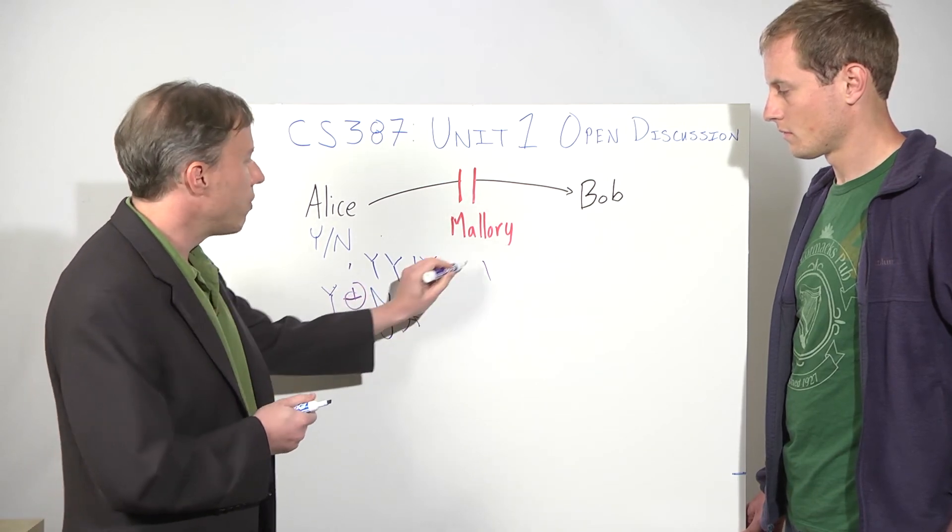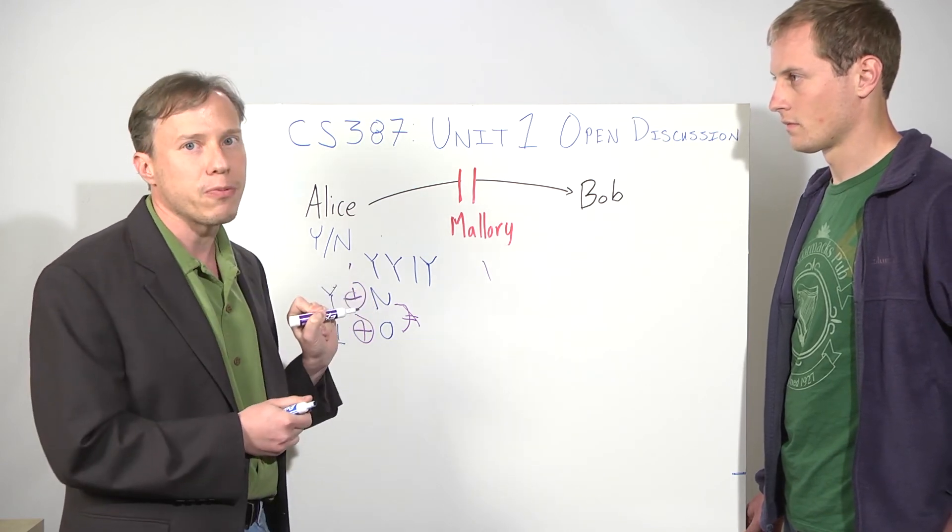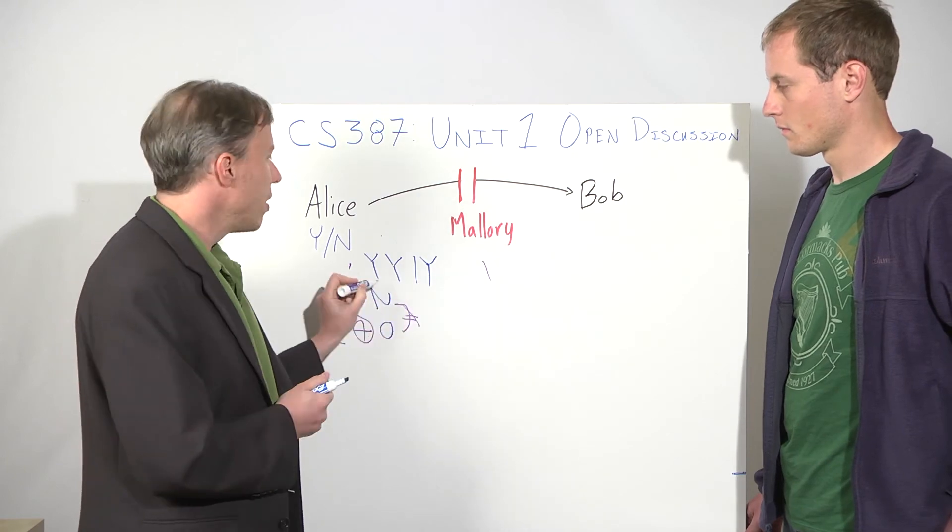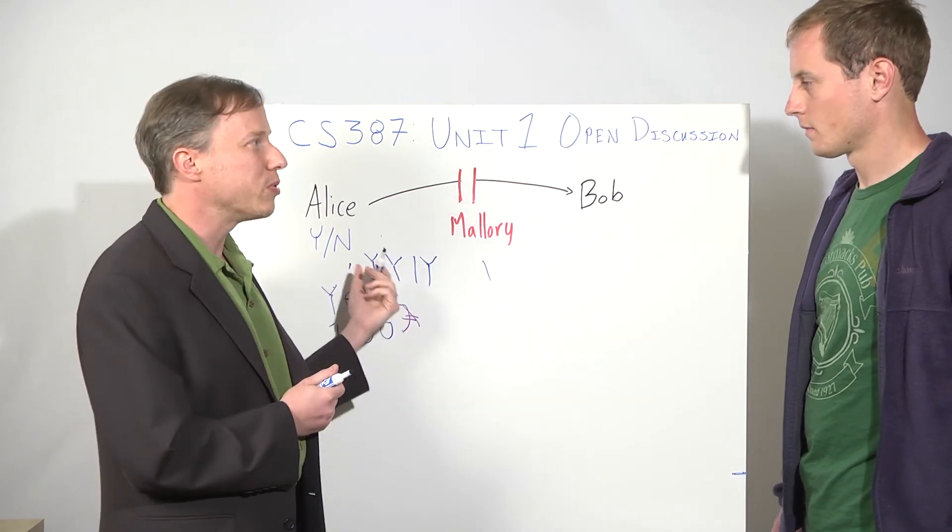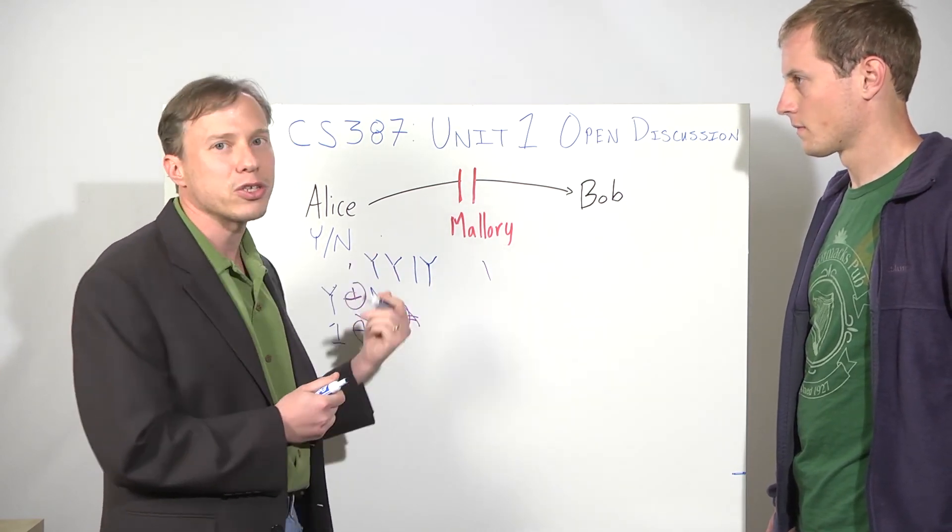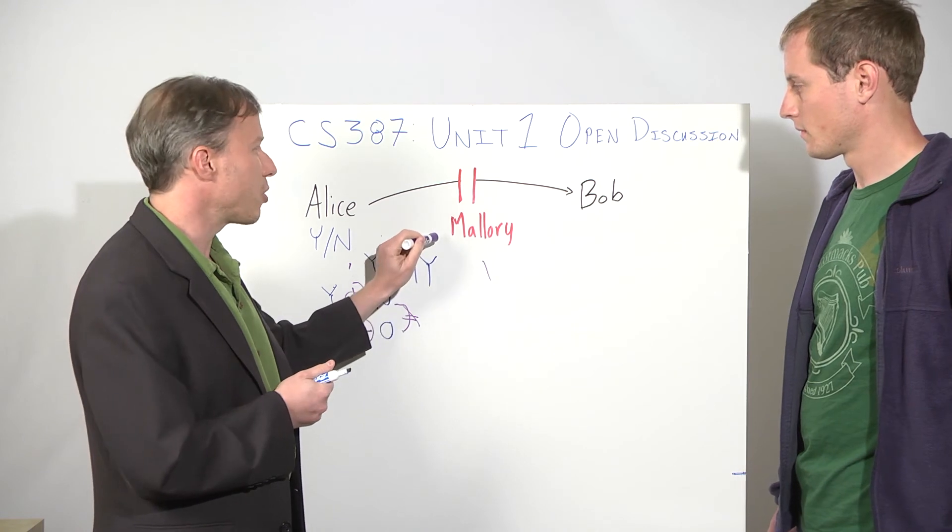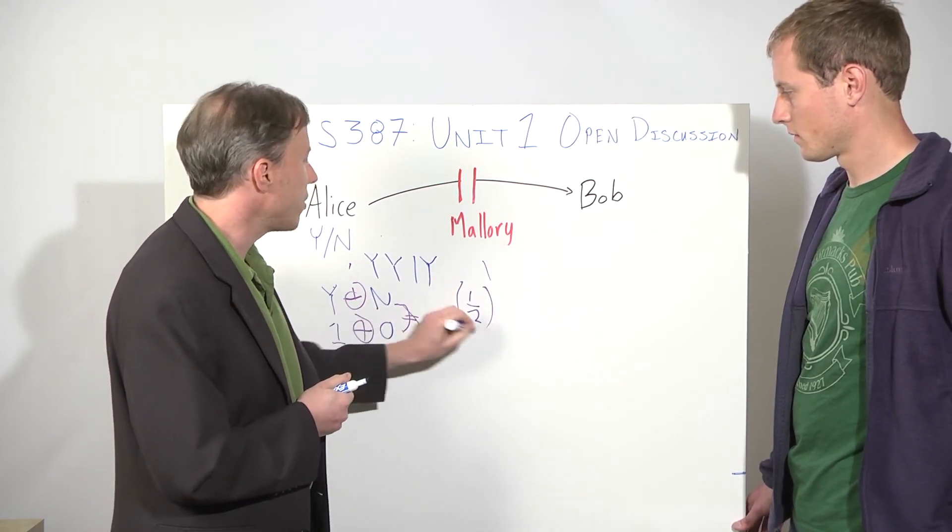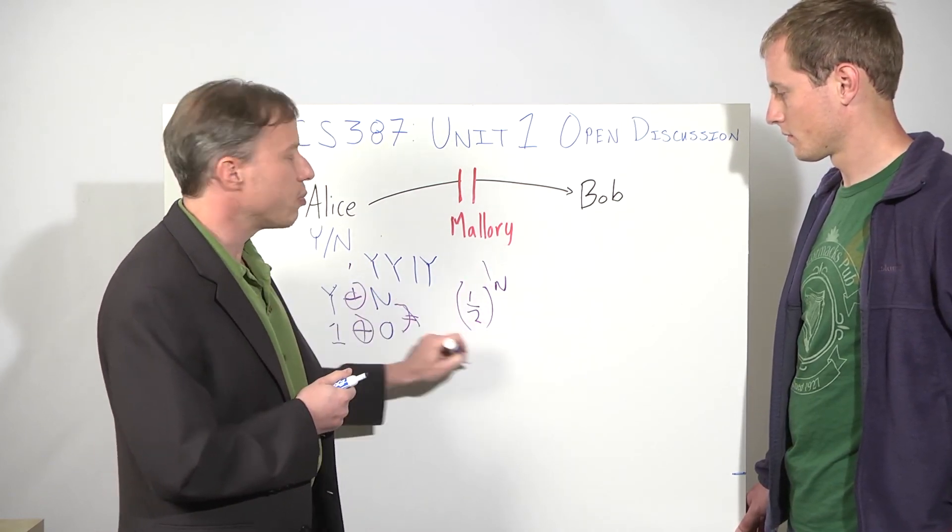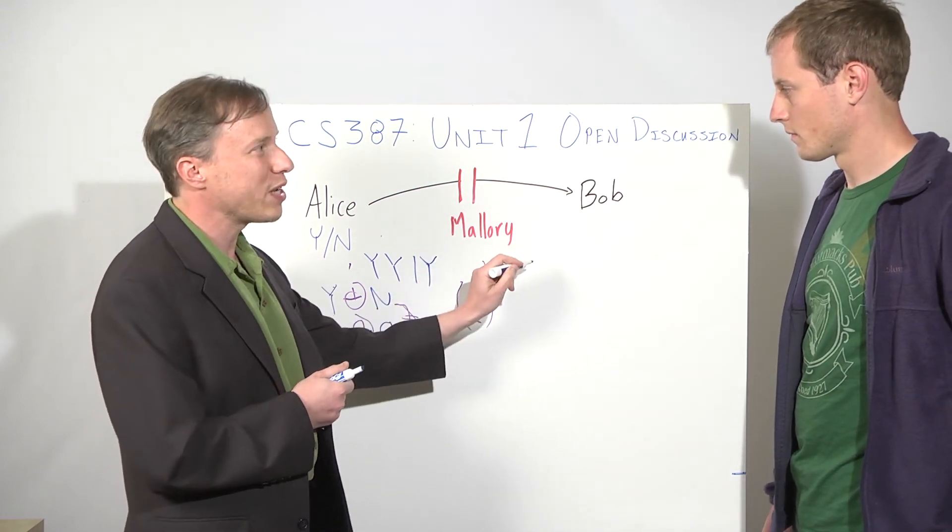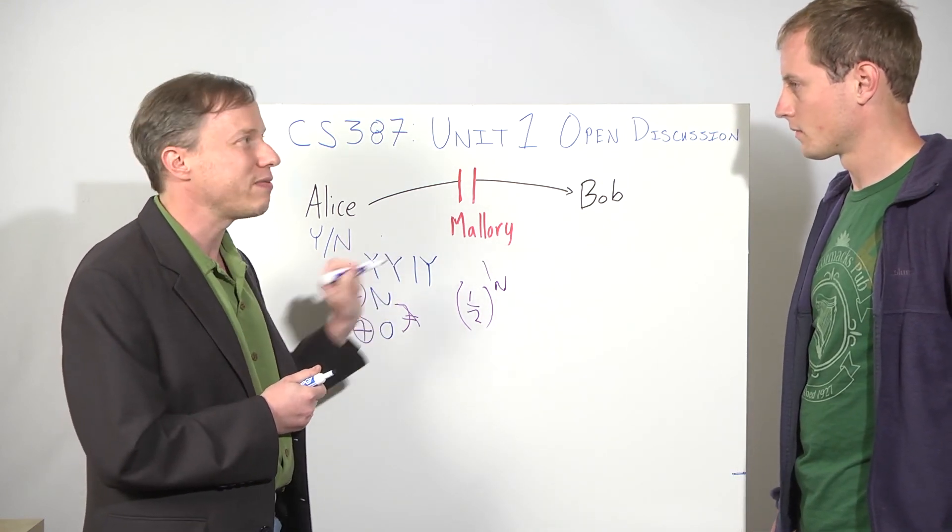When Mallory intercepts this, the xor between y and n is different from the xor between 1 and 0. Those two are not equal. So for Mallory to flip an answer, she's got to guess whether it was a y or an n or a 1 or a 0. If she guesses them all correctly, she could flip them all and Bob would see the wrong answer. But if she guesses one wrong, Bob will see one of the characters in the string doesn't match. And so now Mallory's probability of guessing them all correct is 1 half to the power of how many there are.